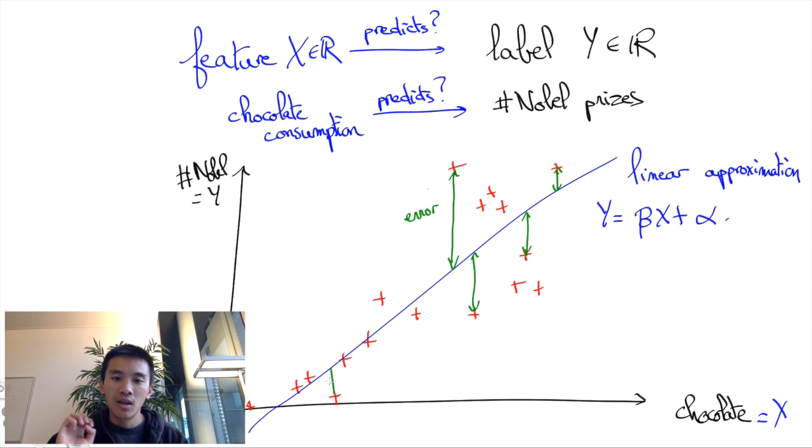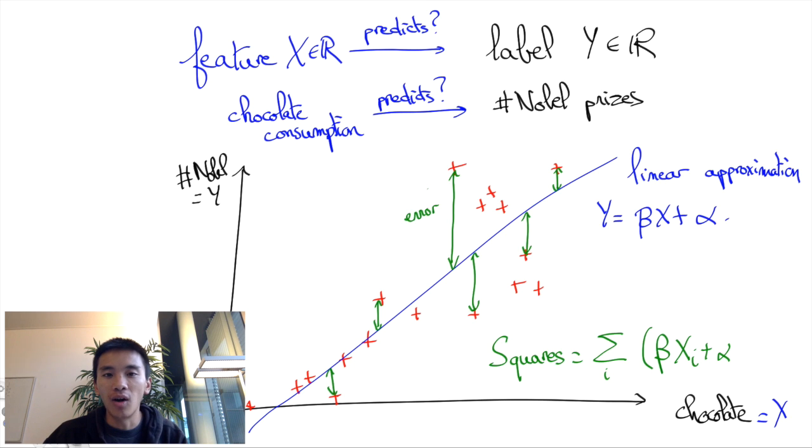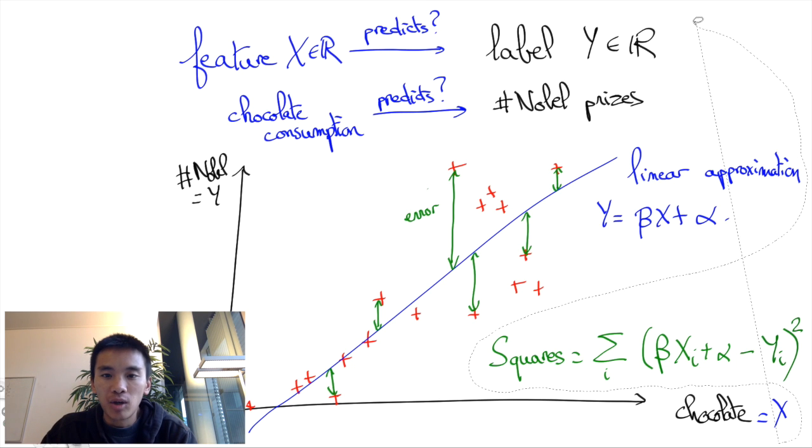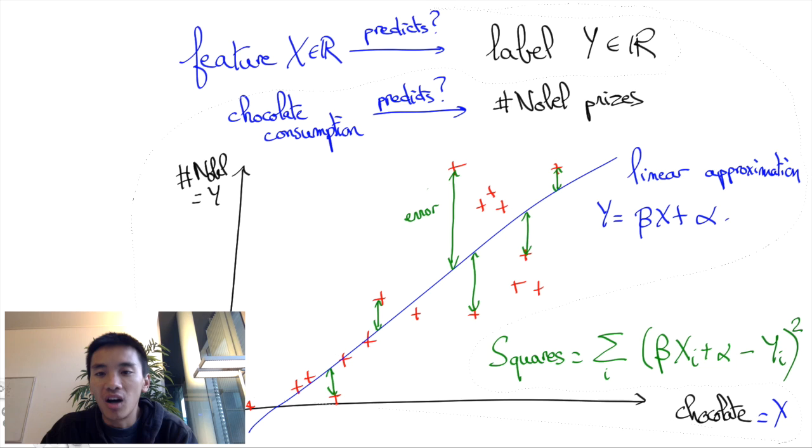In other words, the error of the linear approximation is the quantity I'll call squares here, which is going to be the sum of the squares of the distance between the prediction of the linear approximation, which is beta X_i plus alpha, and y_i, the real label of point i. So we're going to take the square of all these deviations and sum them all up. The reason why this is a brilliant idea is that the linear regression then becomes not too hard to compute.